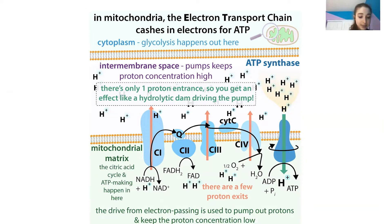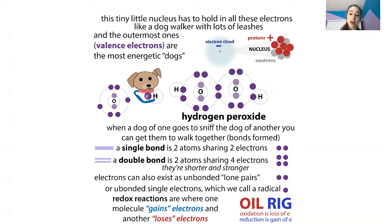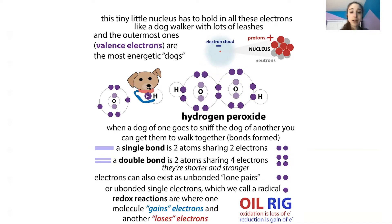Electrons are negatively charged parts of atoms. In redox reactions — oxidation and reduction — oxidation means losing electrons and reduction means gaining electrons. In the electron transport chain, electrons are passed from one molecule to another, and this is used to pump out protons, creating a gradient. That gradient drives a protein like a hydroelectric dam to produce ATP.